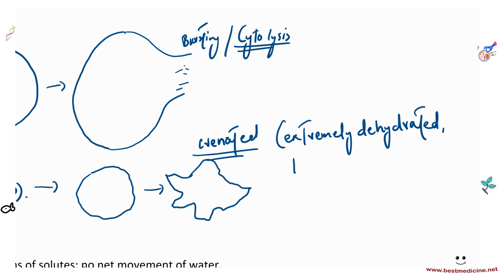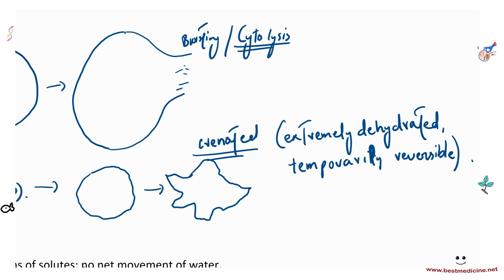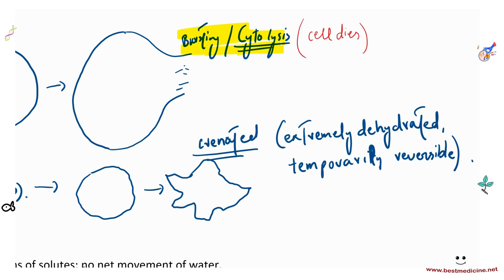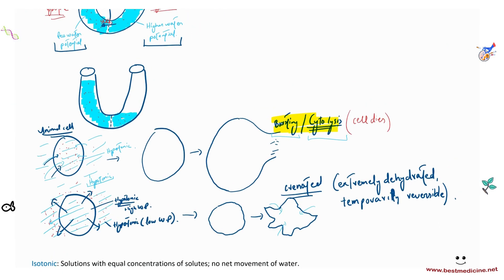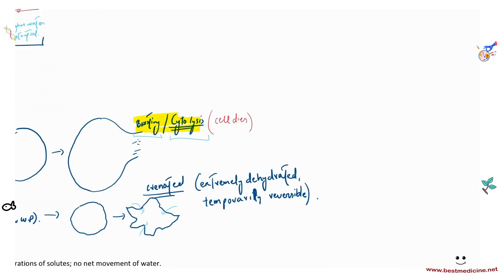Crenation is temporarily reversible — if you supply water within a short period of time, the cell can return to normal. However, cytolysis always kills the cell permanently. If crenation occurs and you rehydrate the cell quickly, it can recover. But if a cell bursts — if cytolysis occurs — it is completely dead.